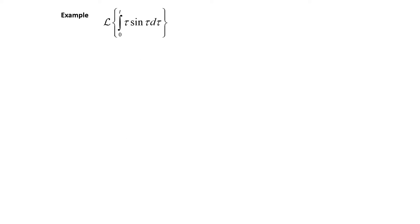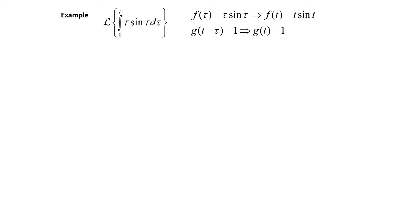For a third example, we want to find the Laplace transform of the integral from 0 to t of tau times the sine of tau with respect to tau. All that appears inside this integral are tau's, so the whole function is our f: f of tau is tau times sine of tau, which means f of t is t times sine of t. It's implied that this is multiplied by 1, so we let g of t minus tau equal 1, meaning g of t also equals 1. We can think of this integral as the convolution of 1 with t times sine of t.